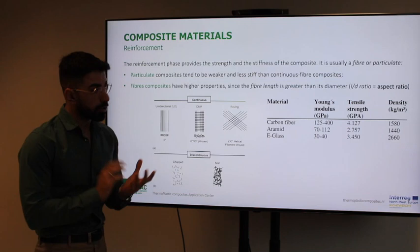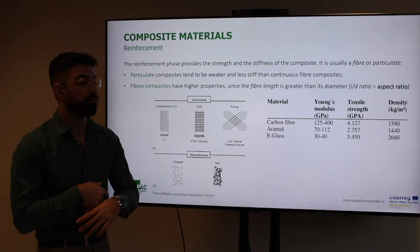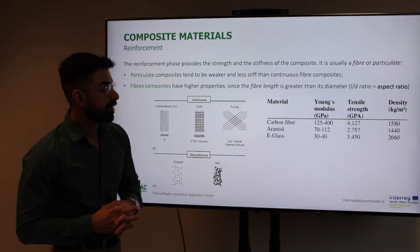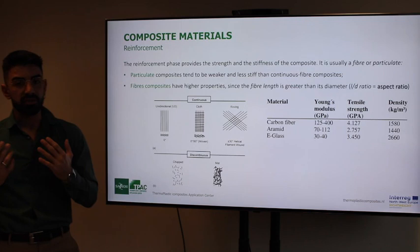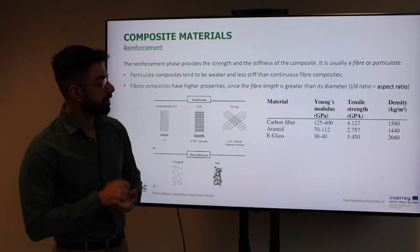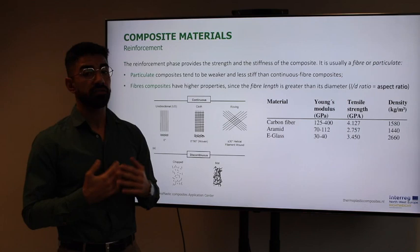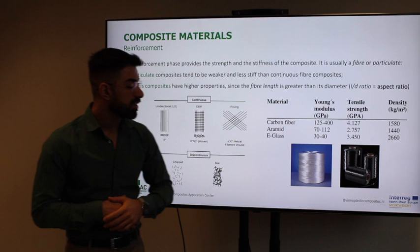Comparing fiber properties, carbon fibers have the highest stiffness — the highest Young's modulus — while aramid and e-glass fibers are somewhat lower in modulus. This difference in properties also drives differences in cost. For example, glass fiber can be much cheaper compared to carbon fibers.